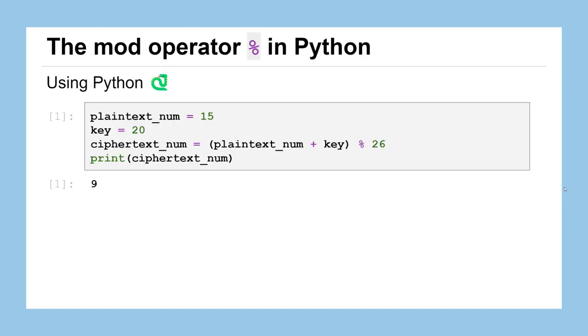Now, how would we do this in Python? We'll see that Python has a handy modular arithmetic operator or the mod operator. It's the percent symbol. And it will tell you which value is equivalent to the one that you specify between 0 and whatever your mod value is. So for example, if we had some plaintext represented numerically as 15 and our key was 20, we could compute the ciphertext numerical value by adding the plaintext number and the key together. And then if we mod by 26, it will find the equivalent integer between 0 and 25 to whatever plaintext num plus key is.